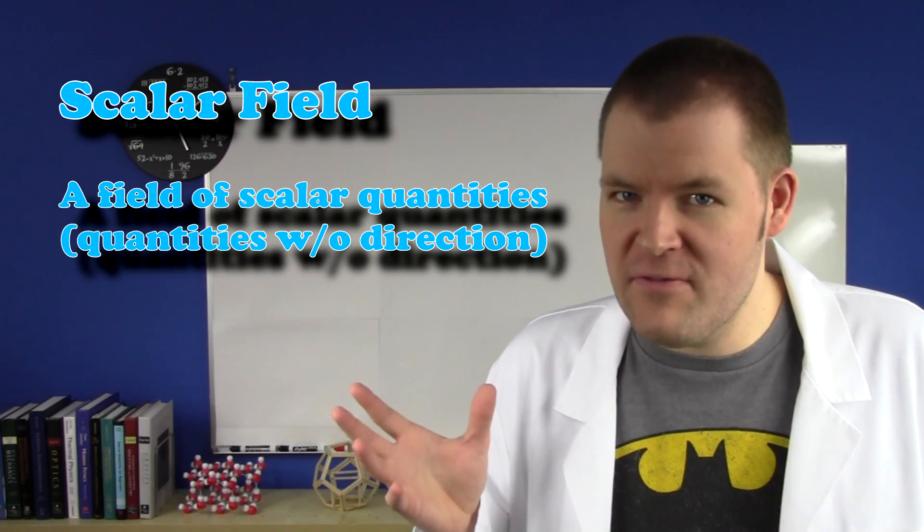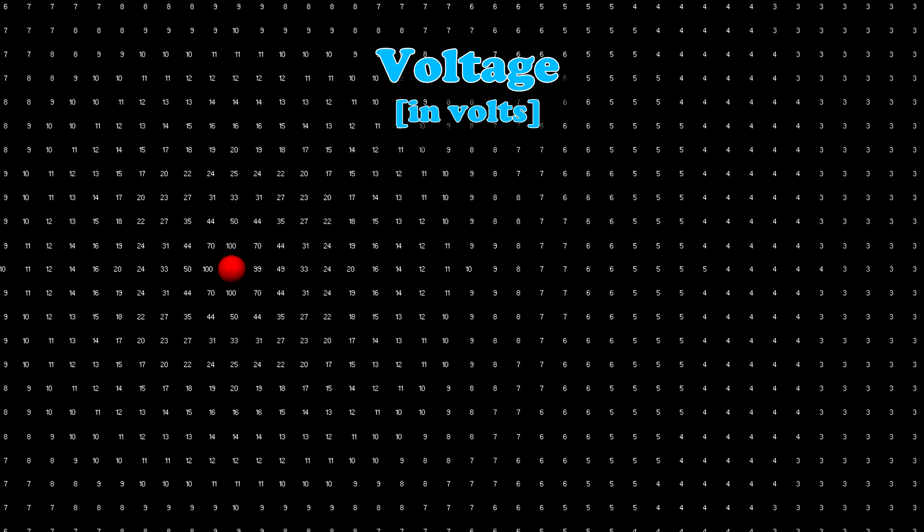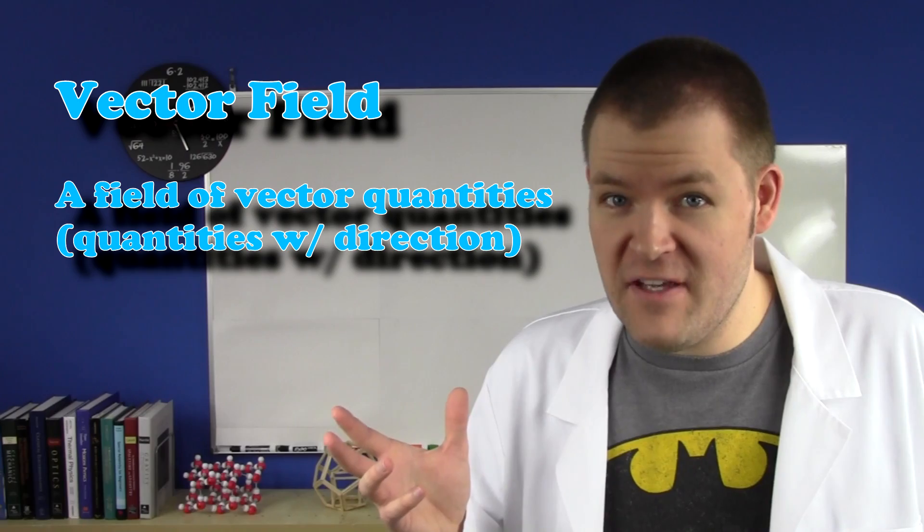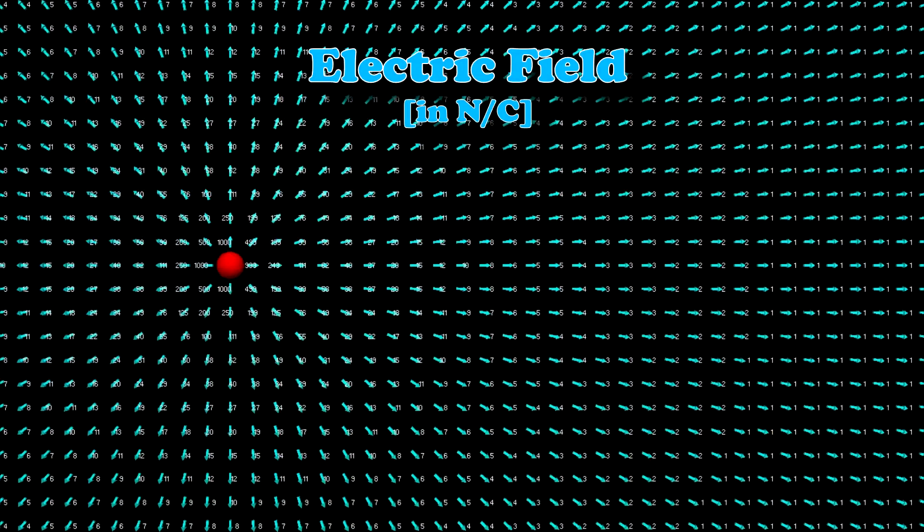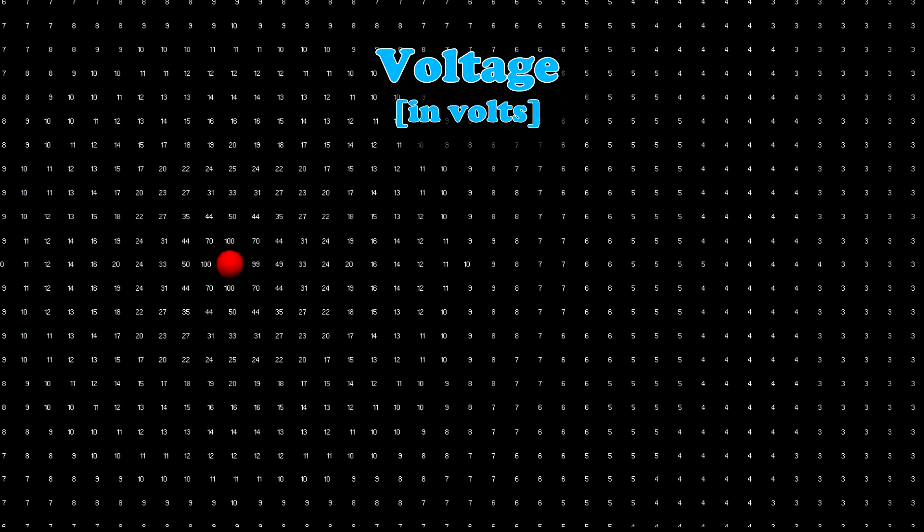If it's just numbers we're assigning, then we call it a scalar field, like the voltage in this diagram for a positive point charge. If those numbers also have direction, then we call it a vector field, like the electric field in this diagram for the same positive point charge, which is actually the direction of the largest change in the voltage numbers. You can even make diagrams like this for multiple charges.